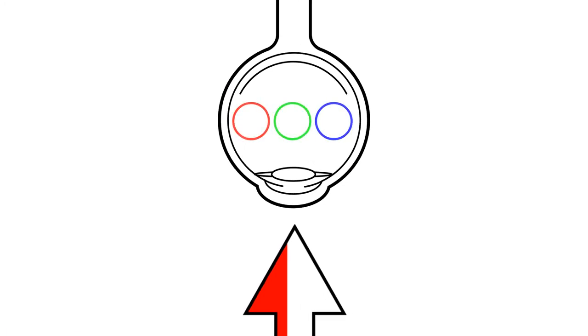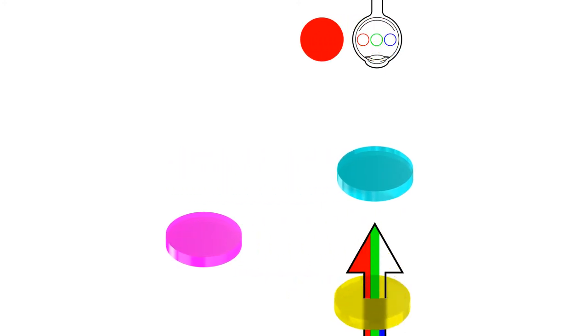When this red light enters the eye, it activates the red color receptors, so the overlap between yellow and magenta appears red. When light passes through yellow and cyan, only green light makes it to the eye. The overlap between yellow and cyan appears green.